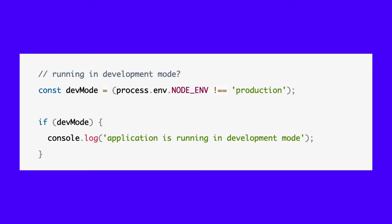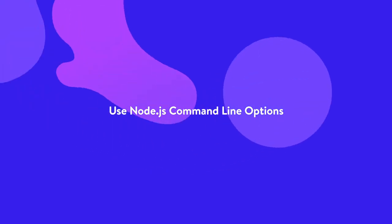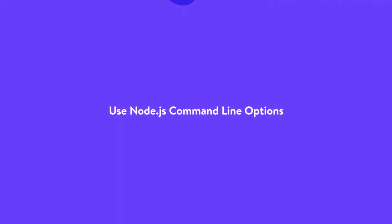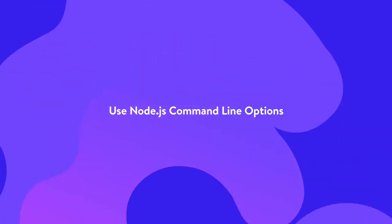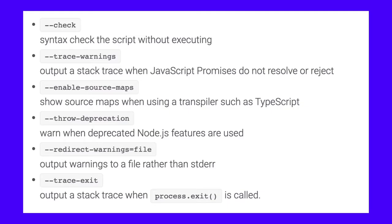You can also use Node's util.debuglog method to conditionally output error messages, for example. Node scripts are typically launched with 'node' followed by the name of the entry script. You can also set the command line options to control various runtime aspects. Check out these useful flags for debugging.